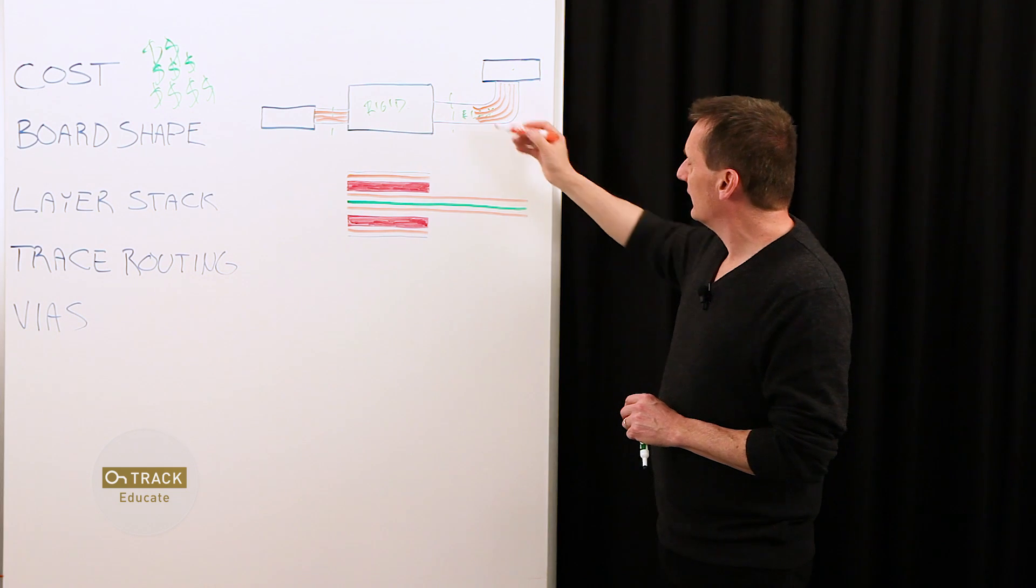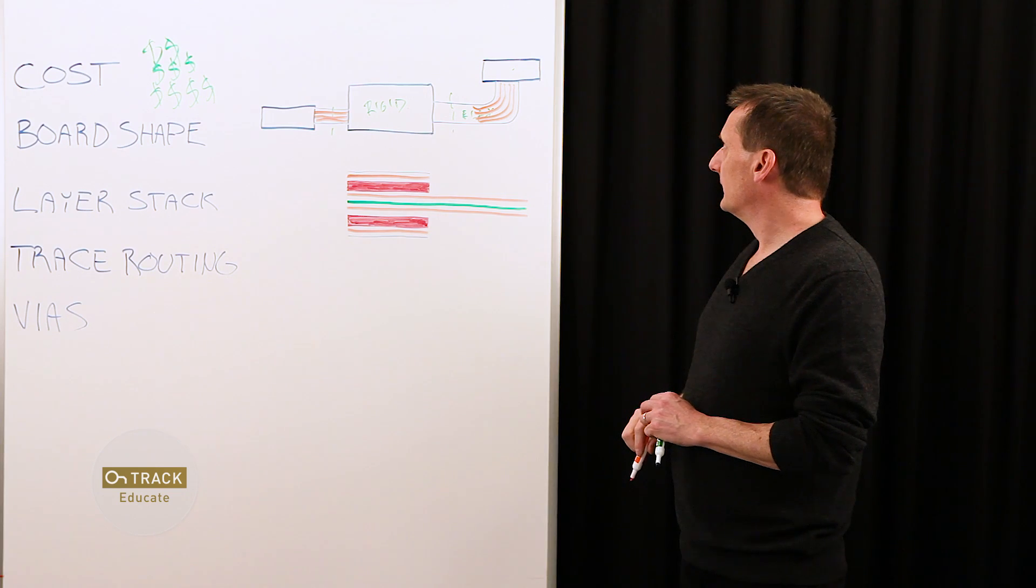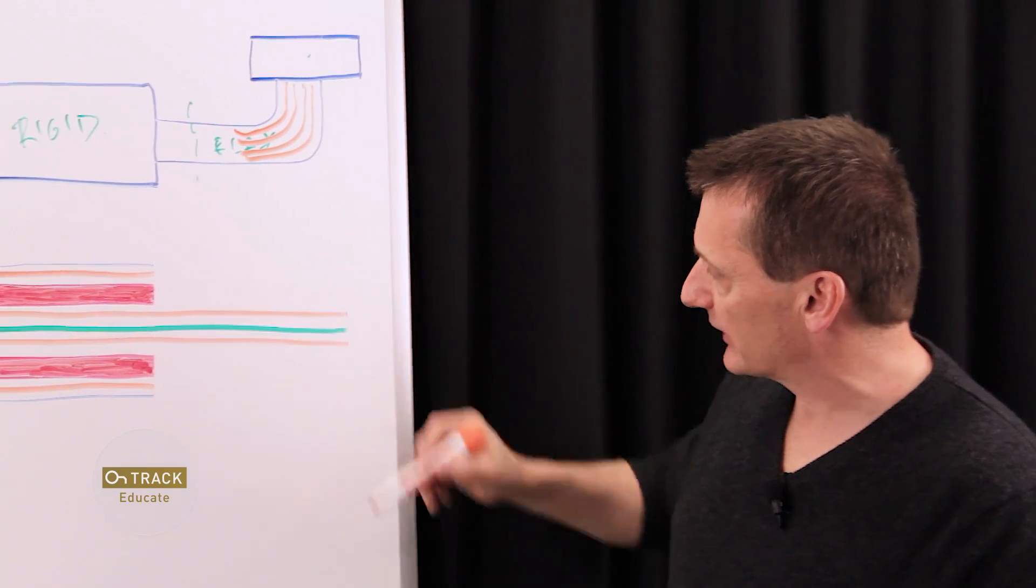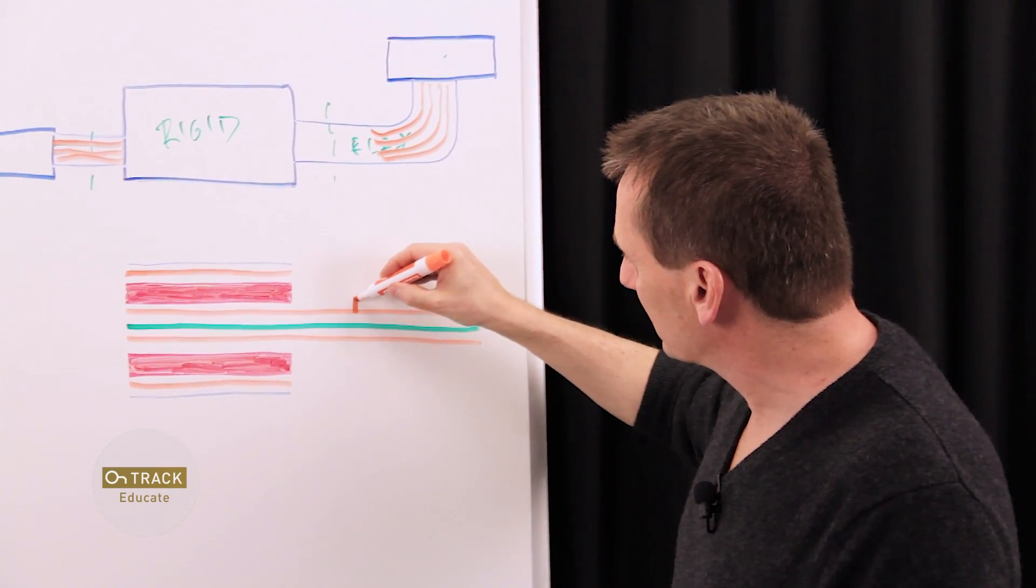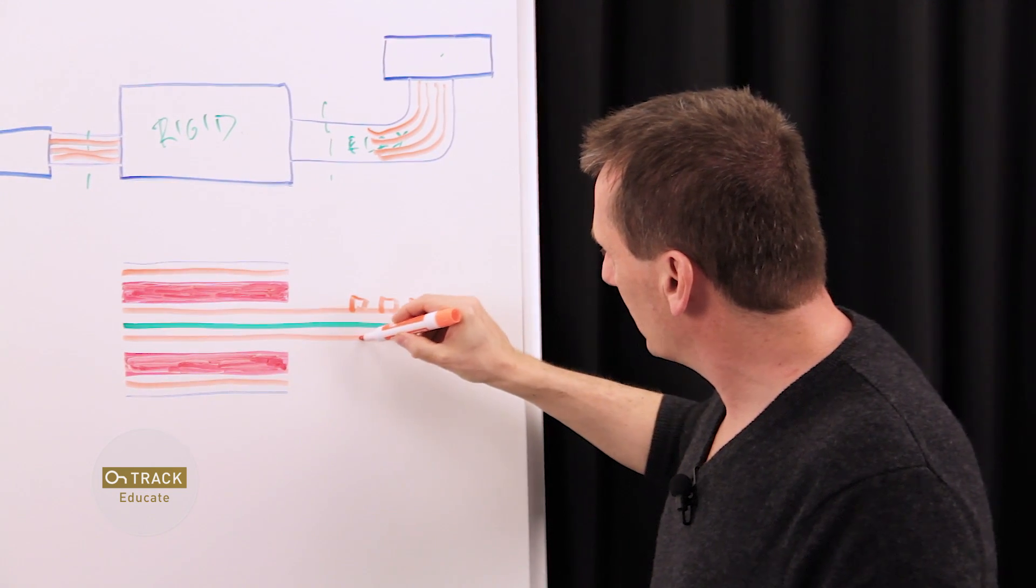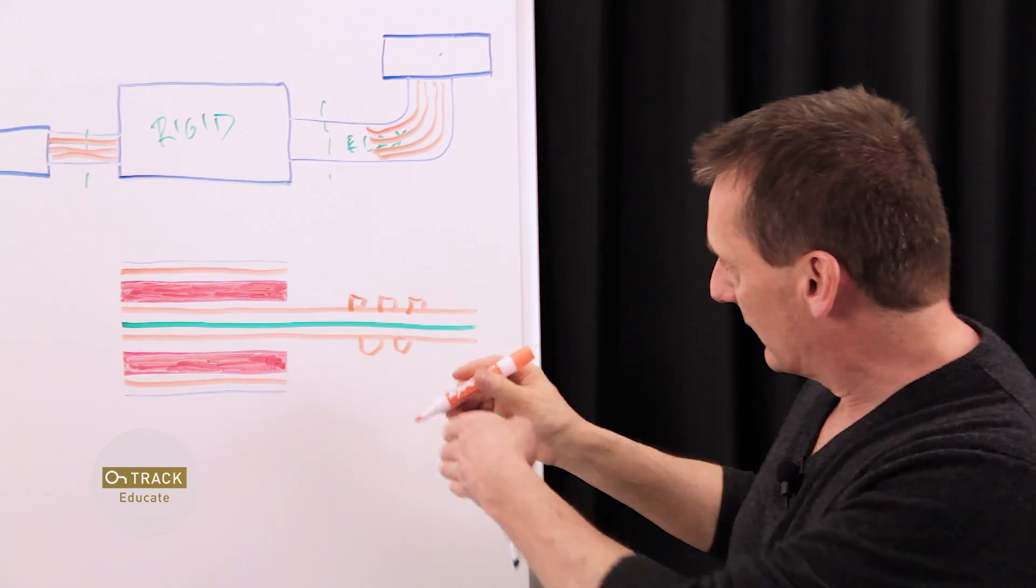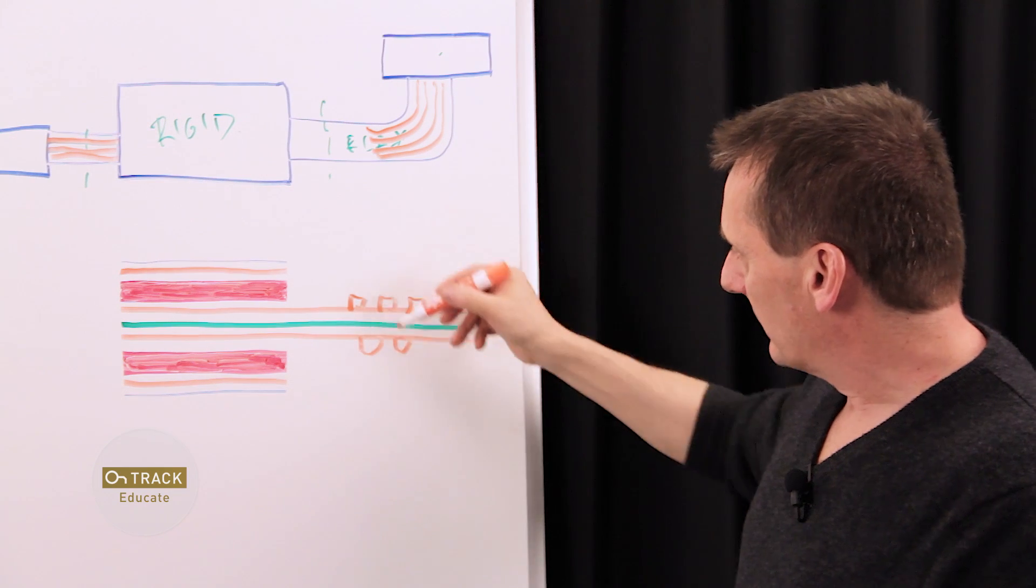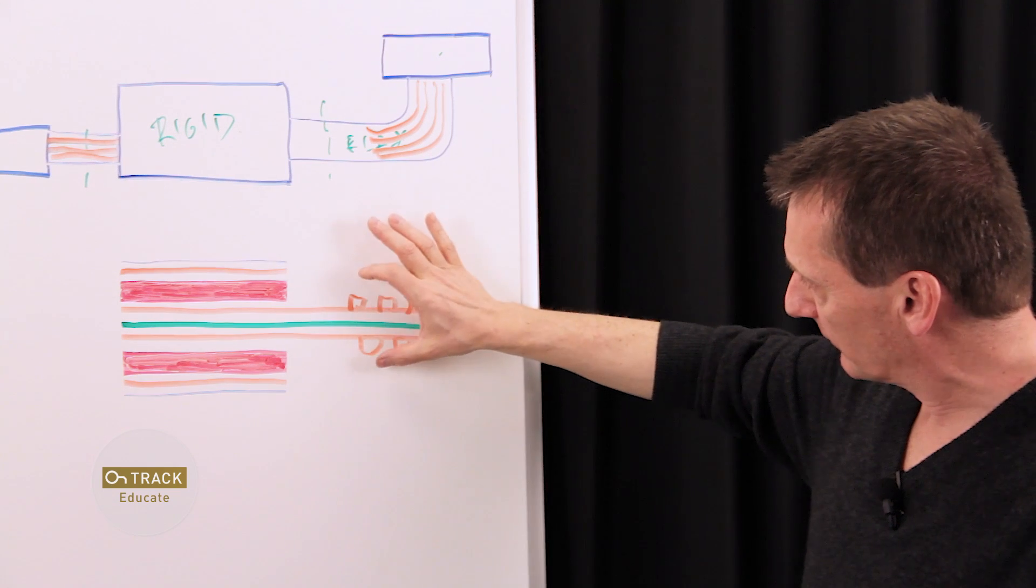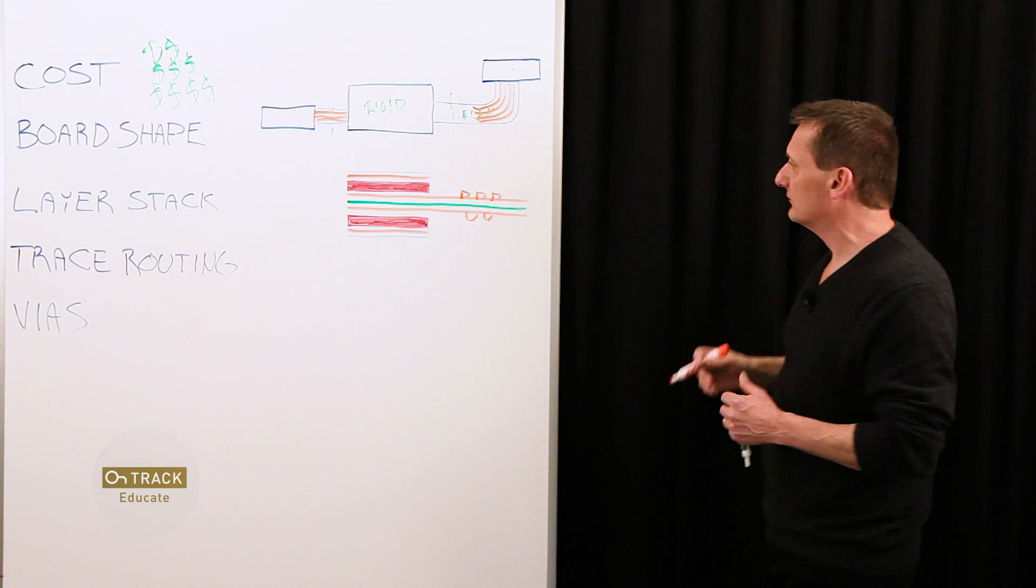Another consideration for routing is when we have a two layer flex section, you want to stagger your traces so that they don't end up one on top of the other. So here, this lower one, if they're parallel, they're going to be not on top of each other. So again, that ensures that we don't get a thickness buildup here where copper from one layer is directly on top of another for traces.